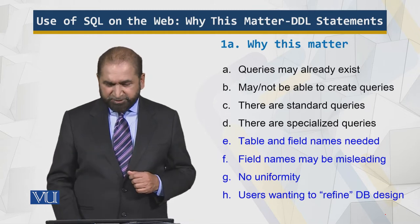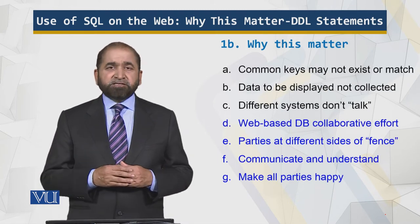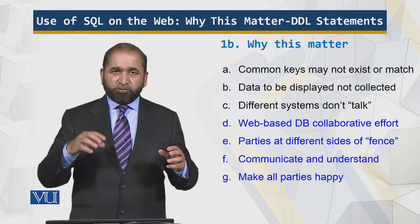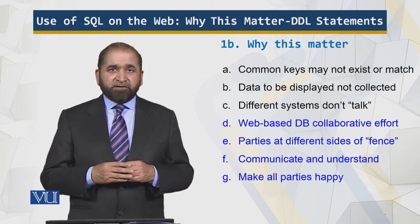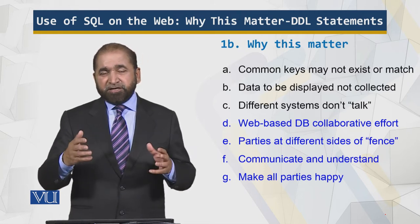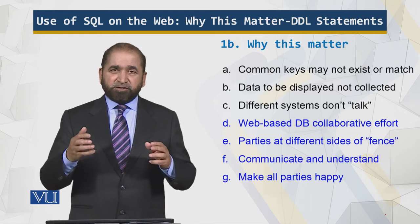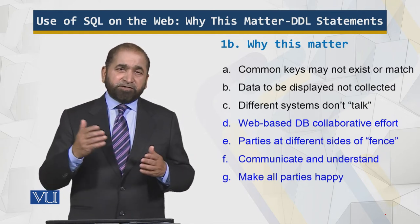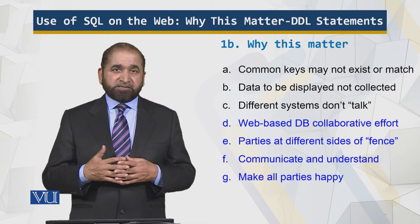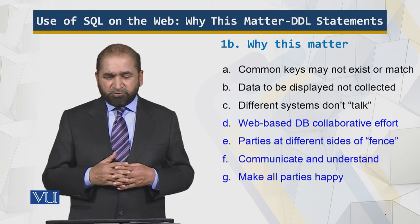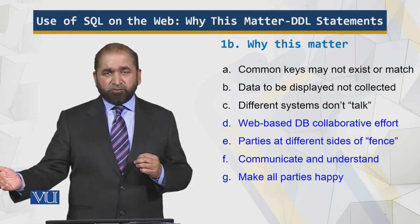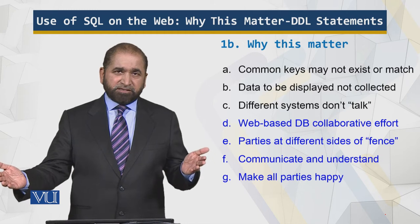Common keys may not exist or match. As discussed in the previous module, connecting tables using common keys — the primary key — avoids duplication. But the primary key may not exist or the data needed for your website has not been collected, organized, or accumulated for this purpose. Accounting, payroll, and inventory systems don't talk to each other — this is the domain of data warehousing, which is course CS614.